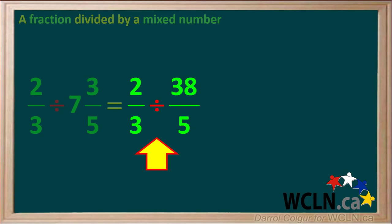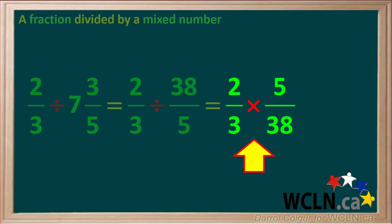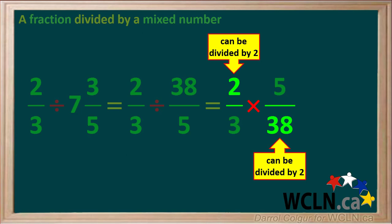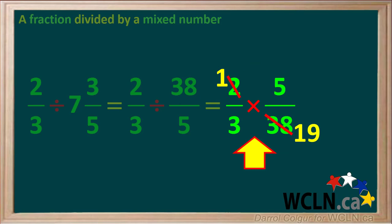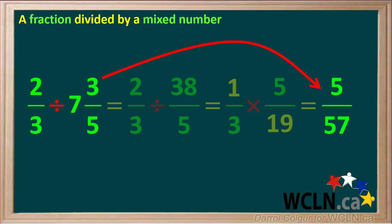So the question now is 2 thirds divided by 38 over 5. To divide by the fraction 38 over 5, we multiply by its reciprocal, which is 5 over 38. So the question now is 2 thirds times 5 over 38. Notice the diagonals 2 and 38 can both be divided by 2, giving us 1 and 19. Multiplying the numerators, 1 times 5 gives us 5, and multiplying the denominators, 3 times 19 gives us 57. So the answer to 2 thirds divided by 7 and 3 fifths is 5 fifty-sevenths.